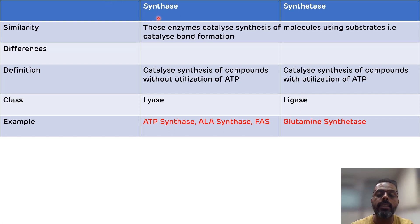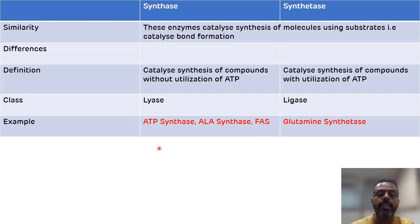Examples of synthase include ATP synthase, which is complex 5 of the electron transport chain; ALA synthase, which is the first and rate-limiting enzyme of heme synthesis; and the fatty acid synthase complex, which plays an important role in the synthesis of fatty acids.